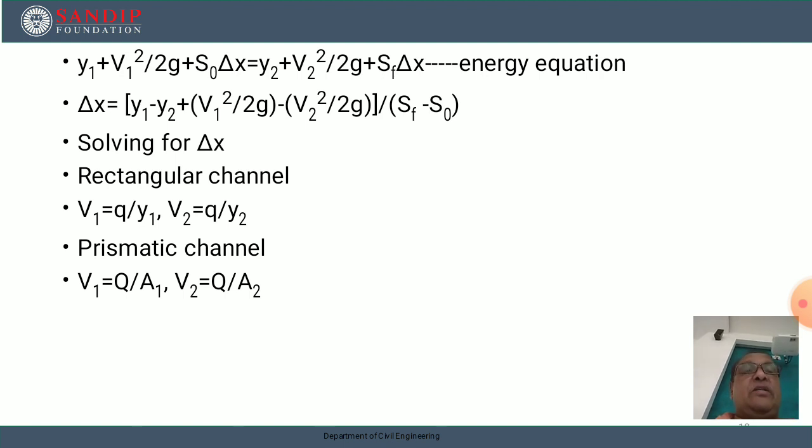Let us solve for distance Δx. For rectangular channel, V₁ = q/y₁ and V₂ = q/y₂, where q is the discharge per unit width. For prismatic channel, V₁ = Q/A₁ and V₂ = Q/A₂.